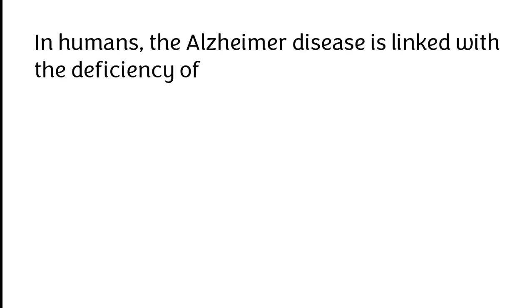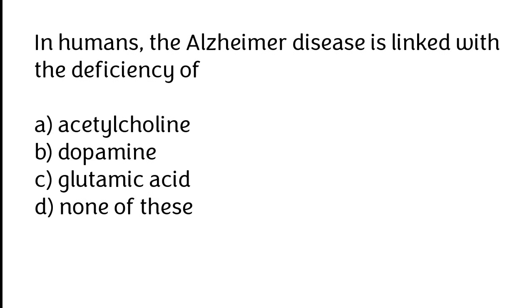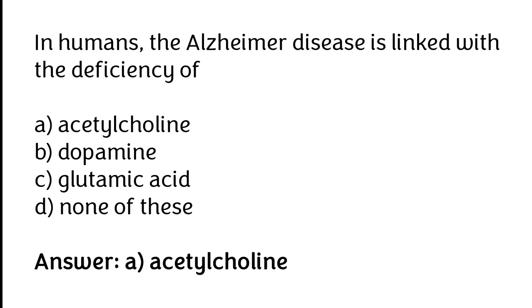In humans, Alzheimer's disease is linked with the deficiency of: acetylcholine, dopamine, glutamic acid, none of these. The correct answer is option A. In humans, Alzheimer's disease is linked with the deficiency of acetylcholine.